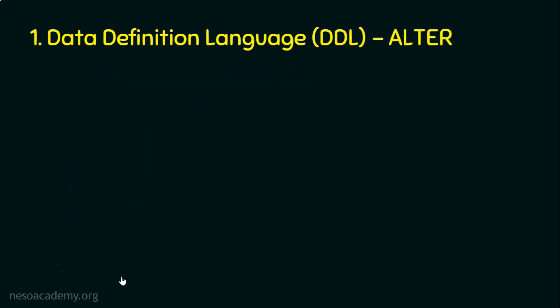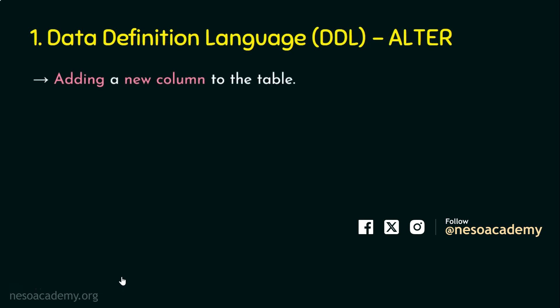Let's see why we need the ALTER command. Let's say we have created a table with five columns, and later we realize we need one more column. In such a case, if we create a new table and try to copy values from the old table, that's a tedious job. So there should be a provision to add a new column to the existing table — that's where ALTER comes in.